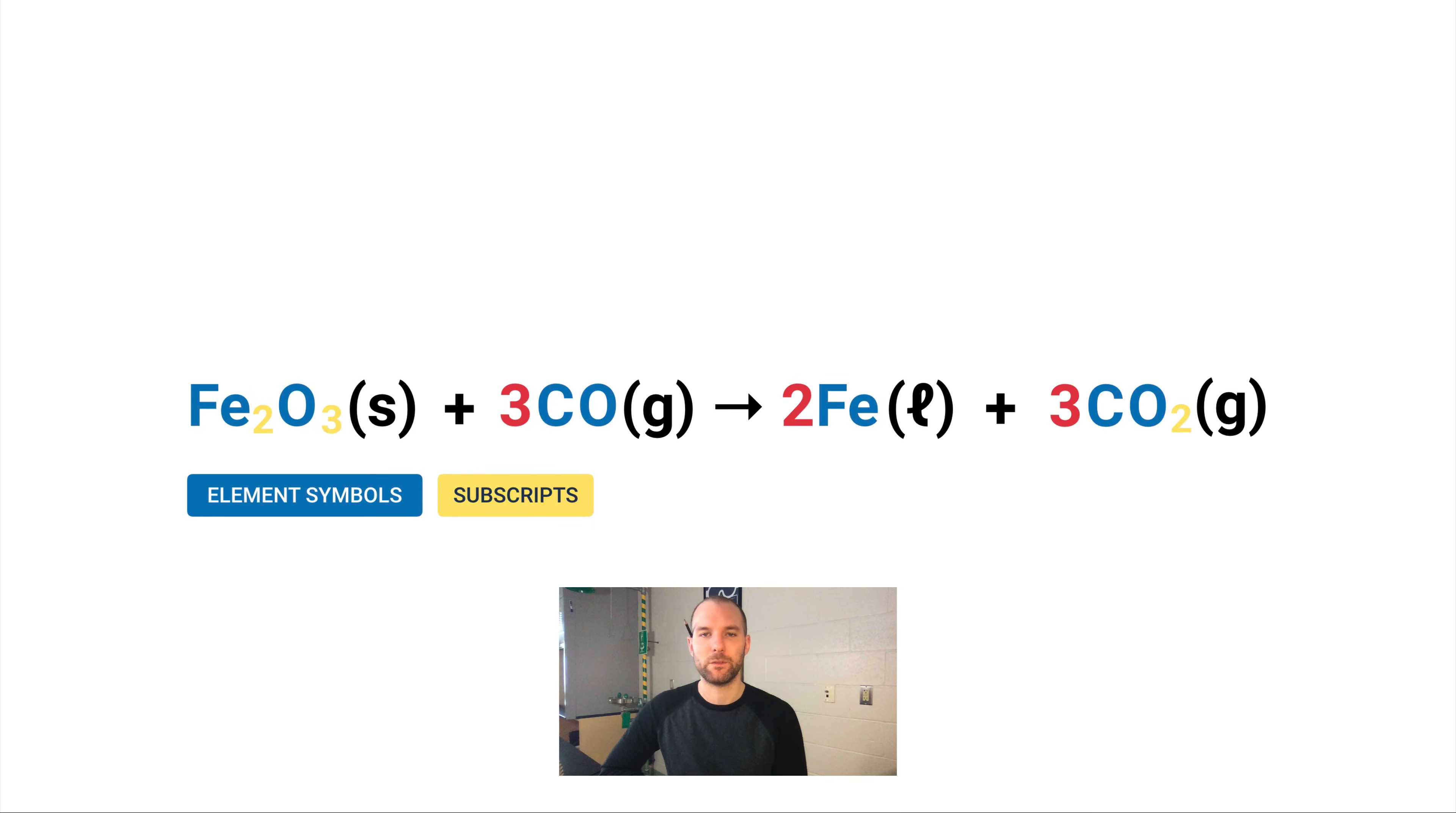These big numbers in front that are red we call coefficients. Coefficients multiply out over the entire formula. So what this 3CO means is that if we had a CO, there would be three of these.